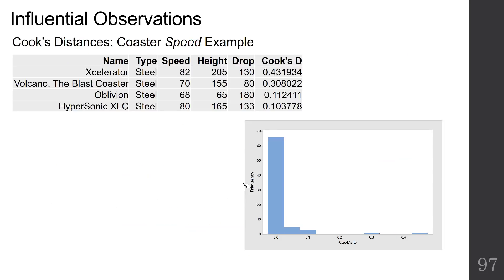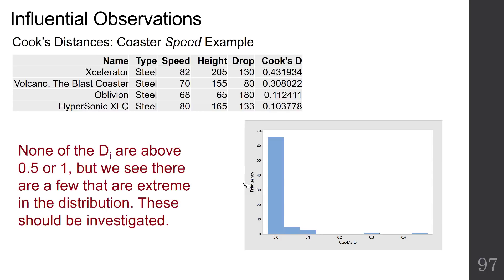We've updated our table with our four roller coasters that we've been talking about with some Cook's D in the right column, and we've also made a histogram of all the Cook's distances for this regression. We can see that none of the D are above 0.5 or 1, but we see that there are a few that are extreme in the distribution. And again, these are the same four roller coasters that we've been talking about.